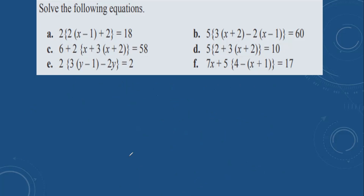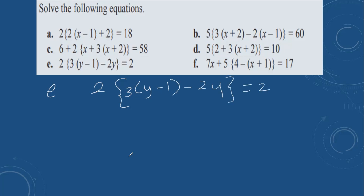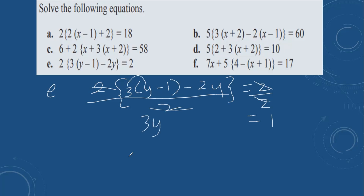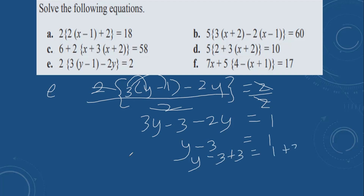Then problem E: 2{3(y minus 1) minus 2y} equals 2. Divide by 2. 2 cancels, giving 1. So 3y minus 3 minus 2y equals 1. 3y minus 2y is y, so y minus 3 equals 1. The opposite is plus 3 on both sides. These cancel. y is equal to 4.